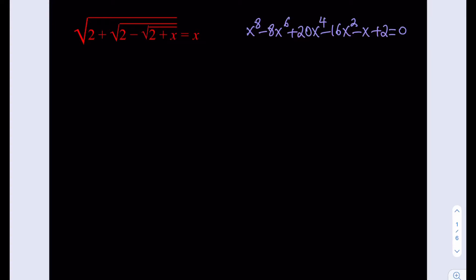Hello everyone, this is going to be challenging math problem number 9. We have a radical equation, we need to solve for x, and the equation you see on the right hand side — if you go ahead and square both sides and keep doing it, you're going to be getting an 8th degree equation. Good luck solving that.